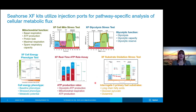Finally, another kit is the substrate oxidation stress test, which is very similar to the cell mitostress test. But in this particular case, we're going to look at how much the cells are using different fuel substrates to fuel their oxygen consumption. So in this test, we can look at whether cells are using long-chain fatty acids, glucose and pyruvate, or glutamine to fuel their oxygen consumption and their electron transport chain.